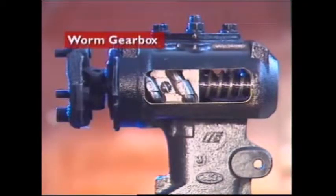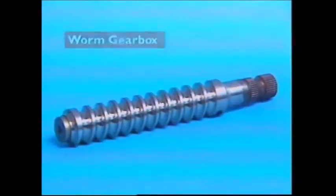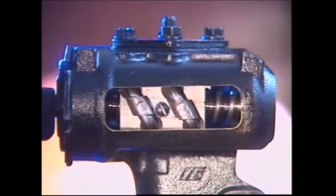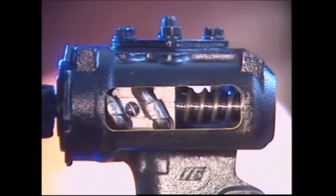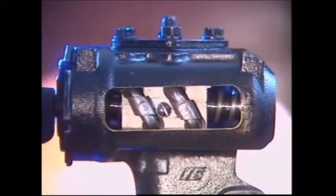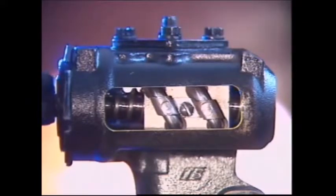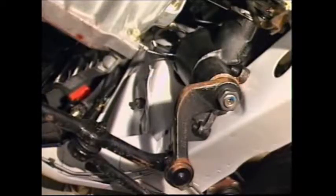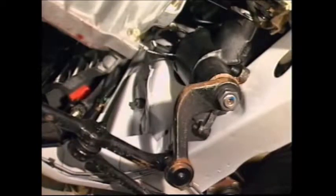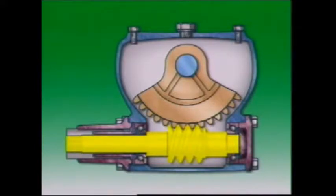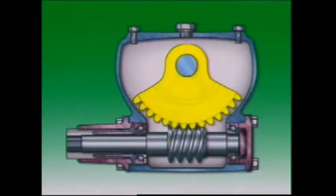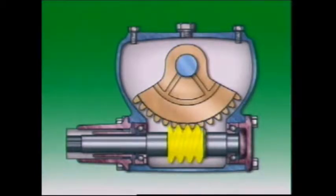This section examines the worm gearbox. A worm gear has teeth cut in the shape of a helix. The steering box is a gearbox — it converts the rotary motion of the steering wheel to the linear motion needed to control the wheels. Its gear ratio increases output torque and reduces the effort the driver has to apply. The input attached to the steering column is called a worm shaft. It is meshed with a sector, or portion of a gear, mounted on its own shaft at right angles to the worm.